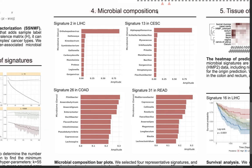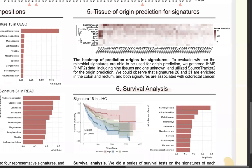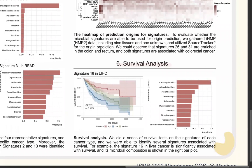We use these signatures for further analyses, such as tracking their tissue origin using SourceTracker2. As shown in the heatmap for signatures 26 and 31, they are highly associated with rectum and colon tissue origins. Additionally, we performed a series of survival analyses — for example, signature 16 in liver cancer is significantly associated with survival, and the bar plot shows the top 10 microbes in that signature.